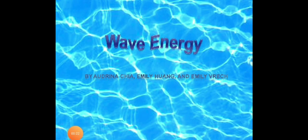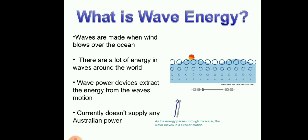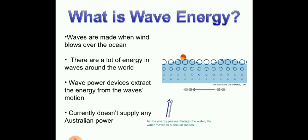The first one is wave energy. What is wave energy? If the wind blows on the surface of the ocean, waves will be created or produced. Waves are made when wind blows over the ocean.